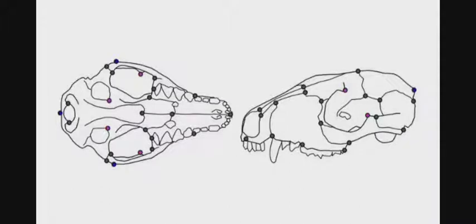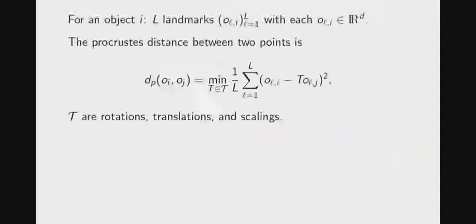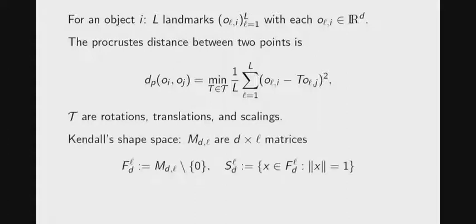Back in the day, if you're thinking about shapes, you'd go to the British Museum and put down landmarks on the archaeological object that you're looking at. You'd ask how similar are these points, modular rotations, translations, and scalings.